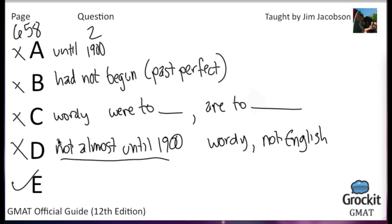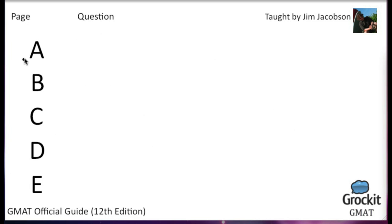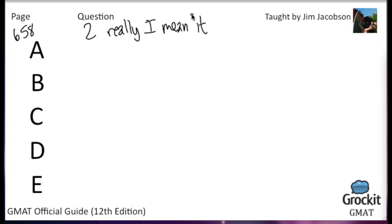Now let me do question number two for real. 'Although a surge in retail sales have raised hopes that there is a recovery finally underway, many economists say that without a large amount of spending, the recovery might not last.' Immediately we can recognize that the subject of the sentence is 'a surge in retail sales.' A surge is singular, but the verb in the underlined portion is 'have raised.' 'A surge have raised' is not grammatically correct — we need a singular form of the verb. So 'have raised' is the problem with A.